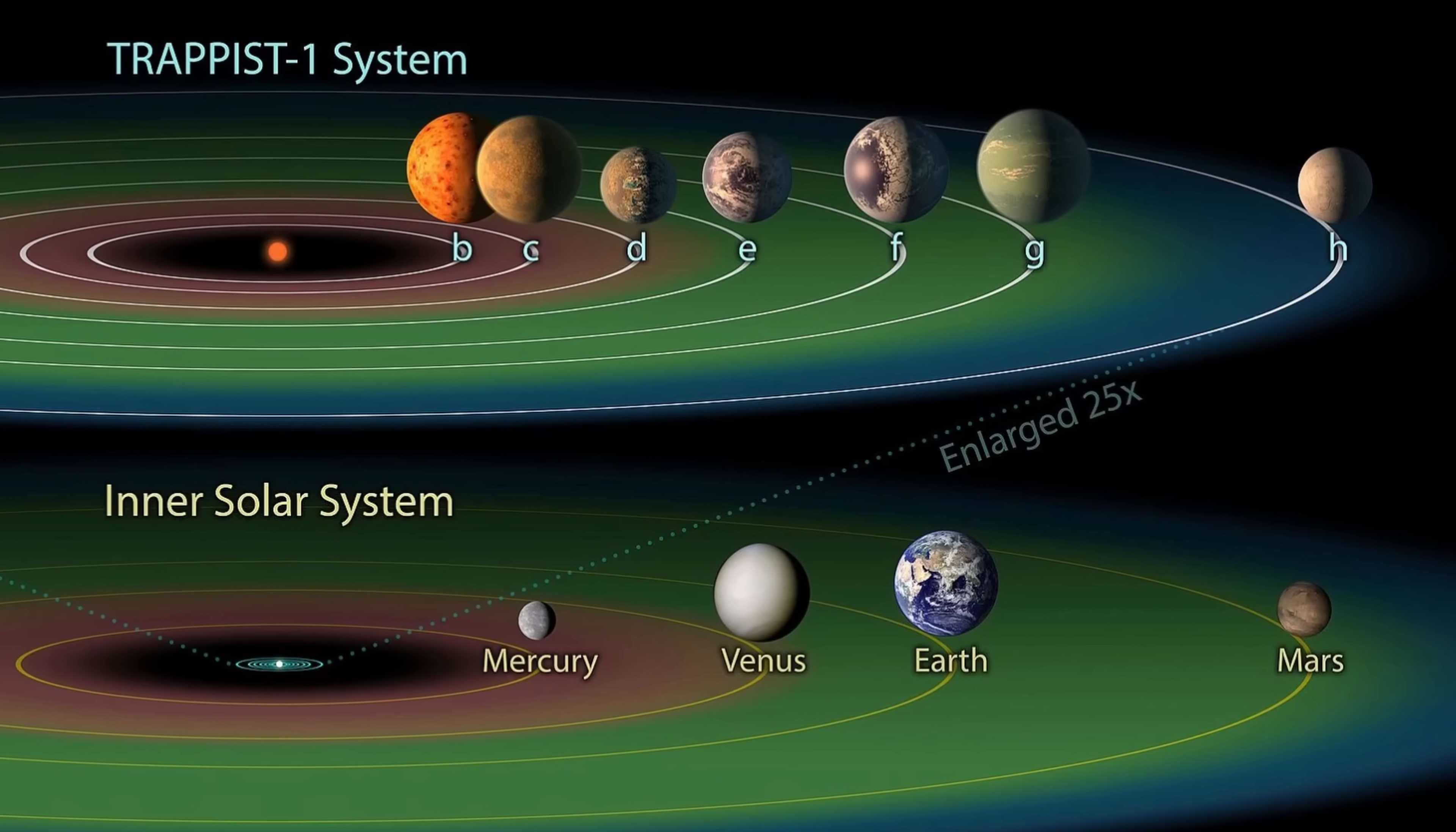For one, they're all going to be tidally locked, always facing with the same side to the star, but also receiving huge amounts of X-ray radiation and huge amounts of flares coming from the star, mostly because they're so much closer to the star compared to planet Earth.